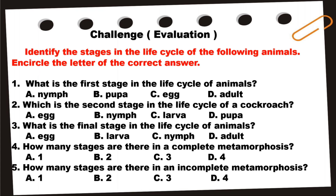Number three: What is the final stage in the life cycle of animals? A. Egg. B. Larva. C. Nymph. D. Adult.